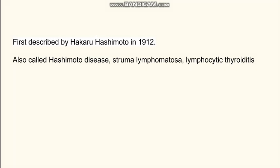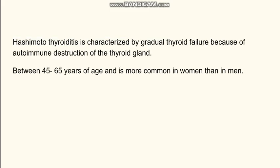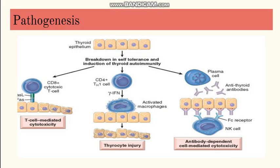Going to the general introduction, then the pathogenesis and then the morphology of the thyroid in this disease. Hashimoto's thyroiditis is characterized by gradual thyroid failure because of autoimmune destruction of the thyroid gland, and it occurs mostly in middle-aged women, between 45 to 65 years of age. It is more common in women than in men, as are other autoimmune diseases.